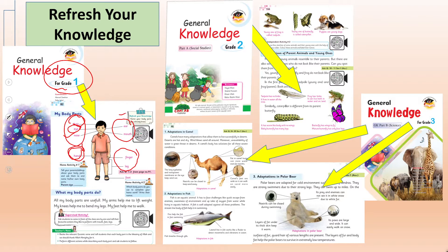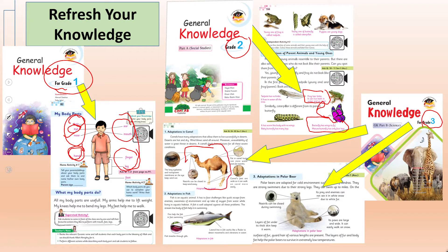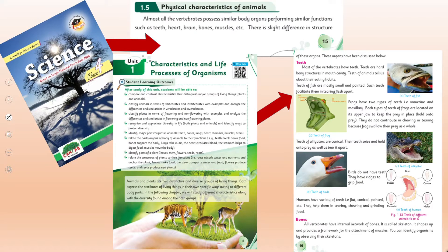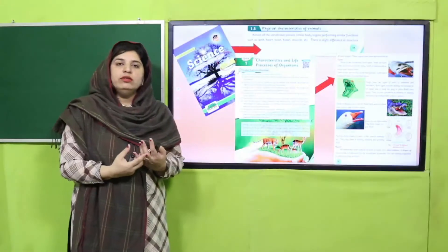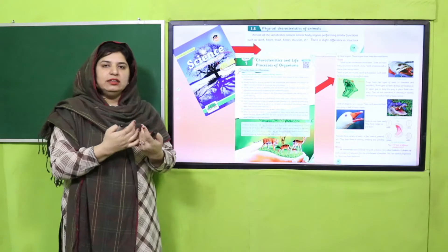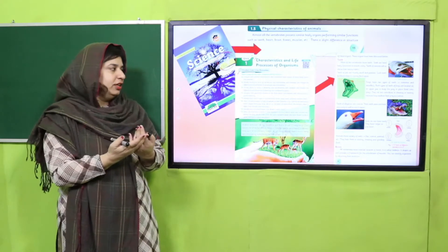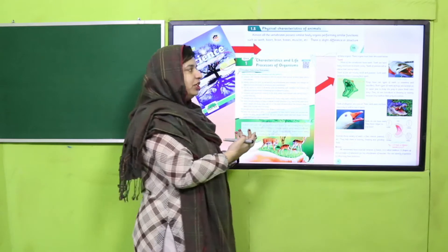In grade 2, you studied some specific body parts in different animals which are not present in all animals. In grade 3, you learned that animals living in particular environments develop specific adaptations to survive in that environment. And in grade 4, you have studied all the body parts or organs that you can easily and apparently see in your body and in another's body.